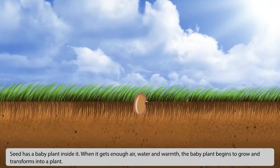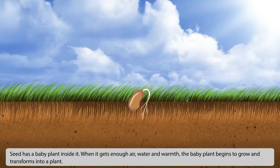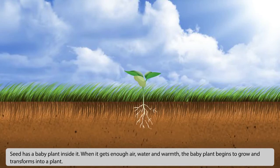A seed has a baby plant inside it. When it gets enough air, water and warmth, the baby plant begins to grow and transforms into a plant.